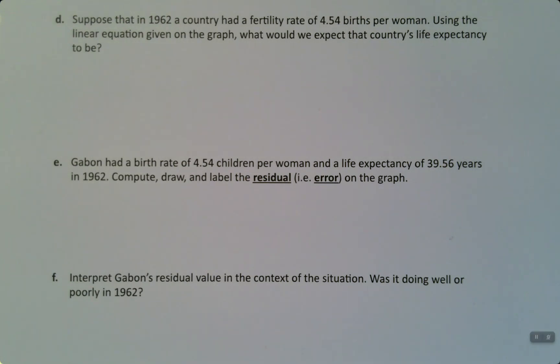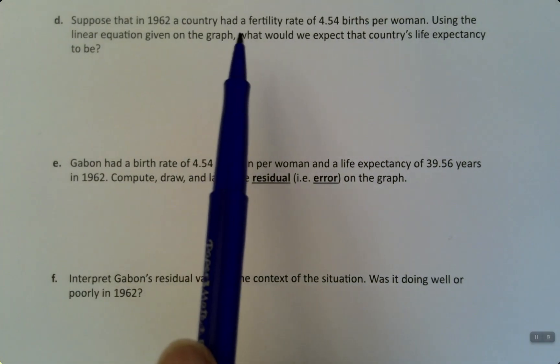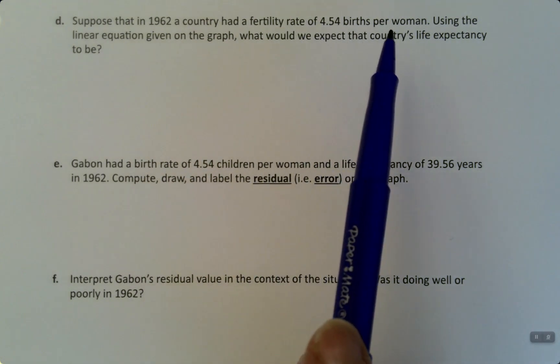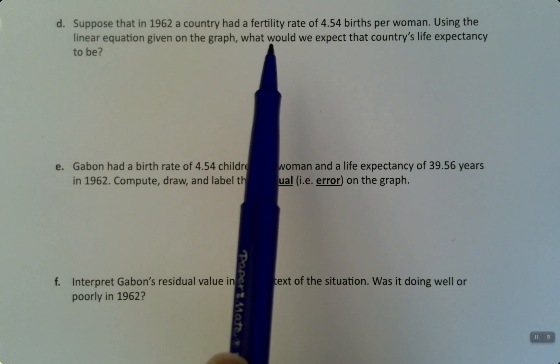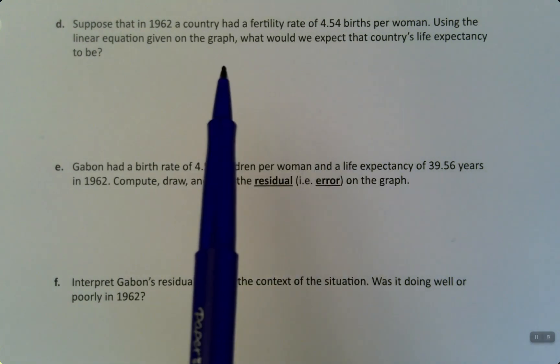We're going to keep going with this example using the fertility rate and life expectancy for countries in 1962. Suppose that in 1962, a country had a fertility rate of 4.54 births per woman, using the linear equation given on the graph, what would we expect that country's life expectancy to be?